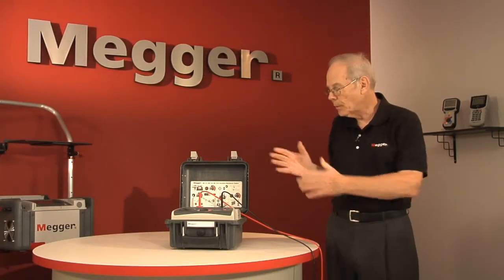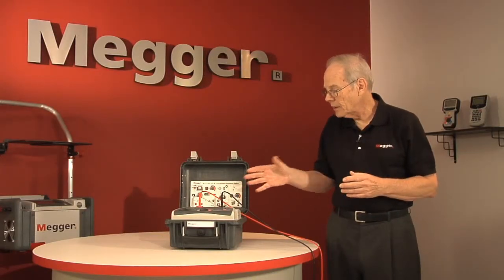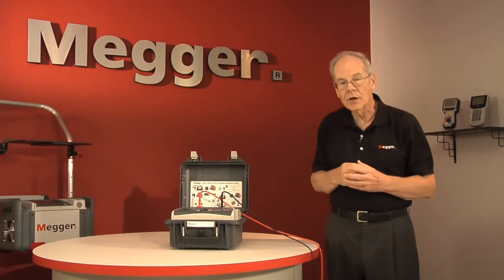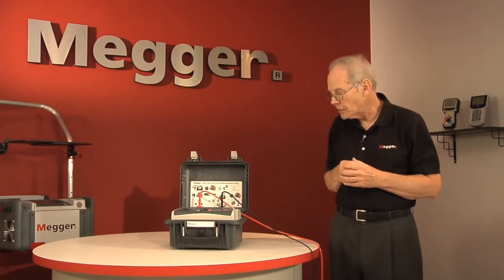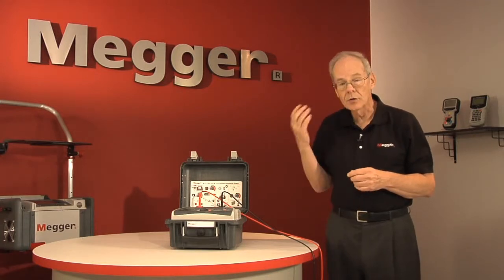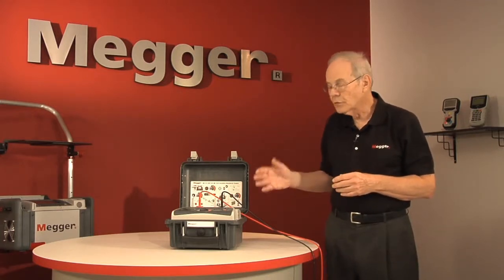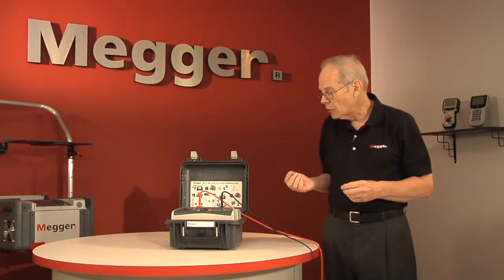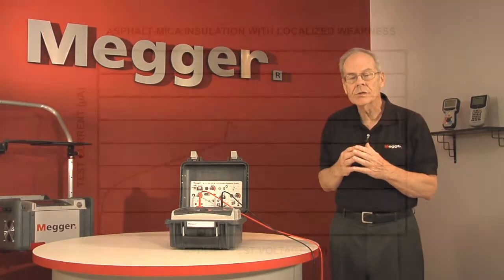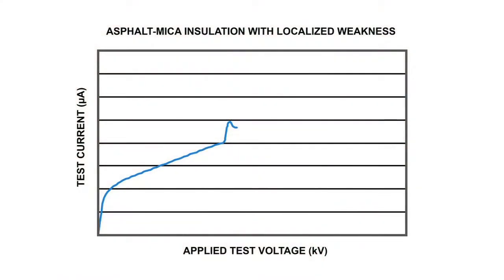There are too many data points collected in this test to display everything at one time. So at the conclusion of the test, the included software will download all the data points and graph them for you. The value of the test is a curve showing the change in resistance with voltage rise at a steady rate across the full sweep of the range.